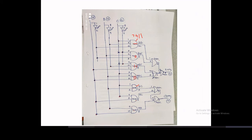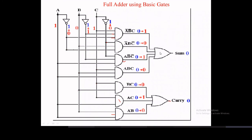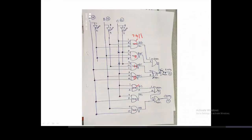For the sum output, a four-input OR gate is needed, but since only two-input OR gates (7432) are available in DELSIM, two OR gates feed two inputs each, and a third OR gate combines their outputs to produce the sum. Similarly for carry, a three-input OR is replaced by two cascaded two-input OR gates.